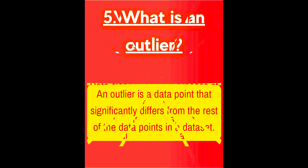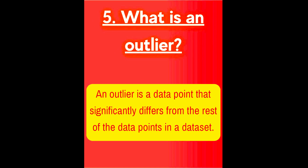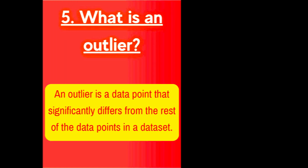Next question is, what is an outlier? An outlier is a data point that significantly differs from the rest of the data points in a dataset.